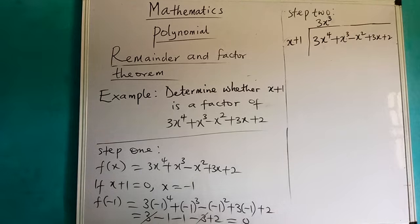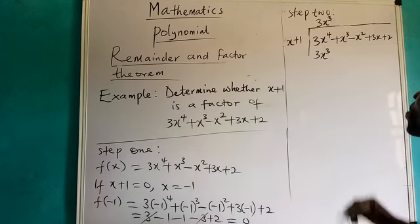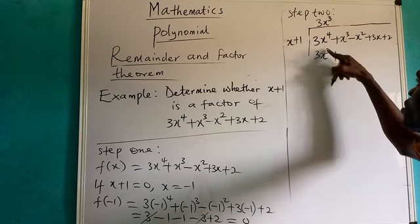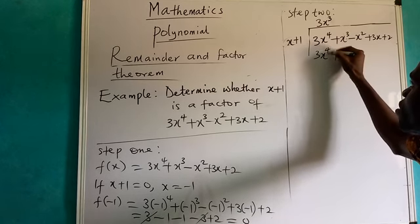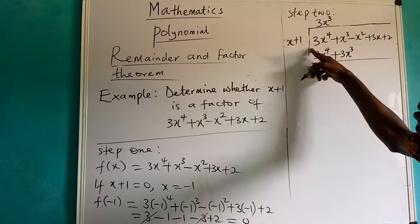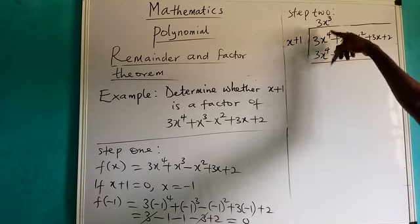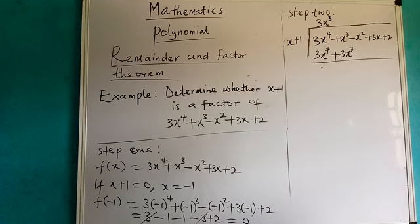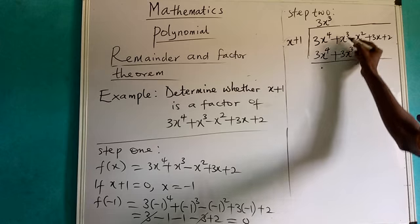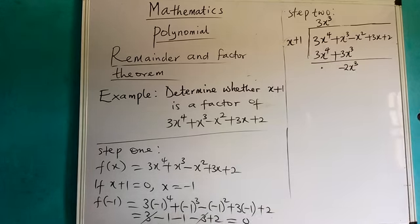We have 3s³ at the top. Multiplying 3s³ by everything: 3s³ times s gives 3s⁴, and 3s³ times one gives 3s³. Remember there is always an invisible minus at this position. If I subtract, 3s⁴ minus 3s⁴ leaves nothing, and plus s³ minus 3s³ gives minus 2s³.